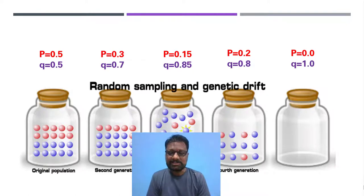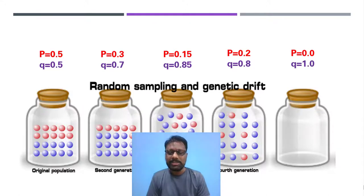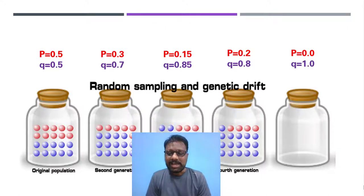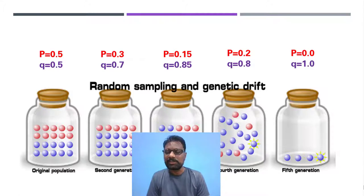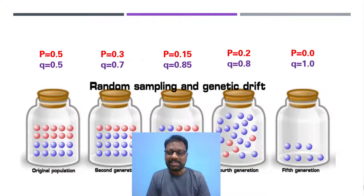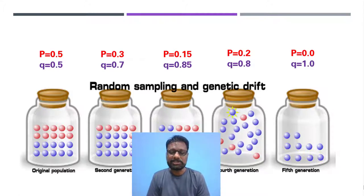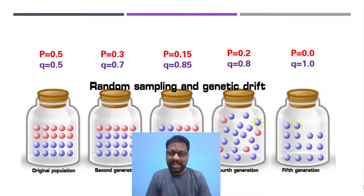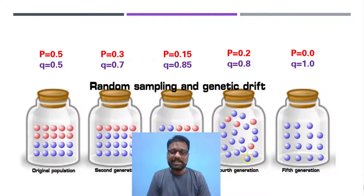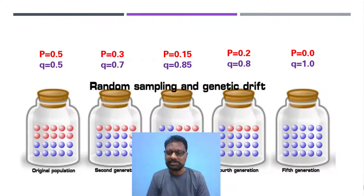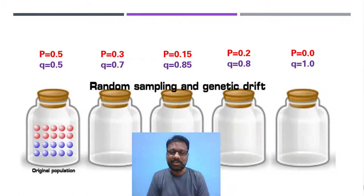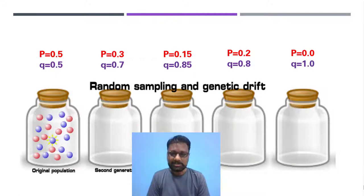This is what happens when the population size is very small. The deviation — the drift in allelic frequency — will drastically affect that particular population, which has completely changed from the original population to a new population. That is what genetic drift does in the case of smaller populations.